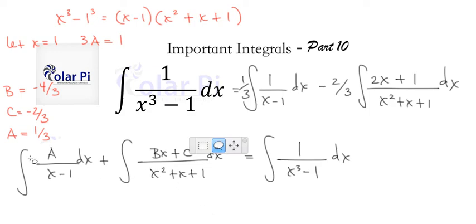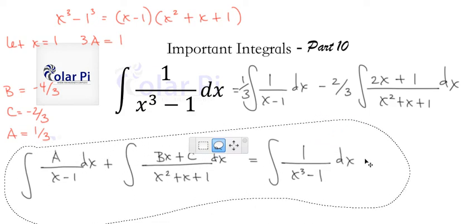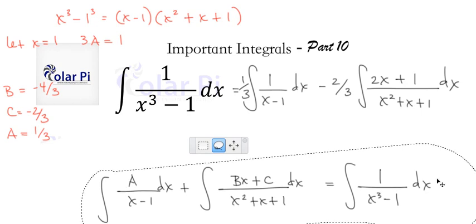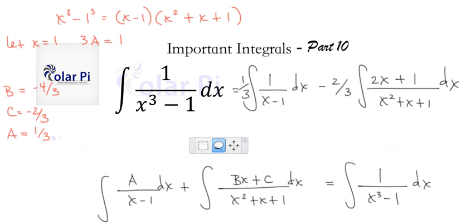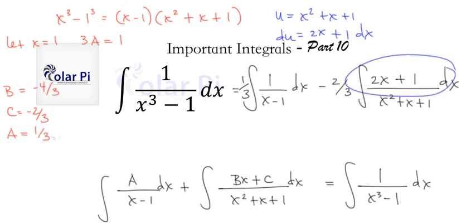Now, look at this. If we made U substitution on this part, and let U equal x squared plus x plus 1, look at what du is. Du is 2x plus 1 dx, which is exactly the numerator. How nice. Because we've got 1 over u du. So that's just ln of u. So this integral is done.